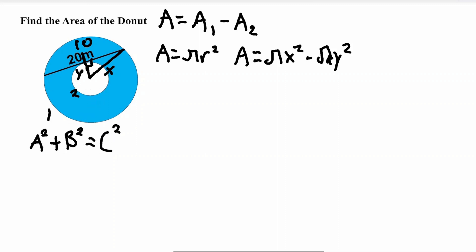So now let's rewrite it. Instead of a squared we have y squared plus 10 squared is equal to x squared, which I'll rewrite to y squared plus 100 is equal to x squared.